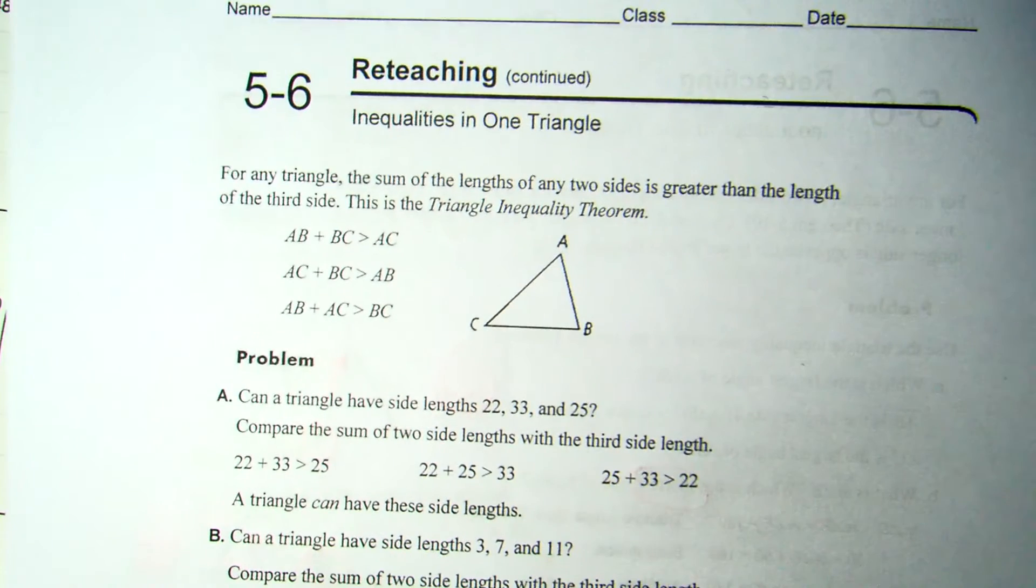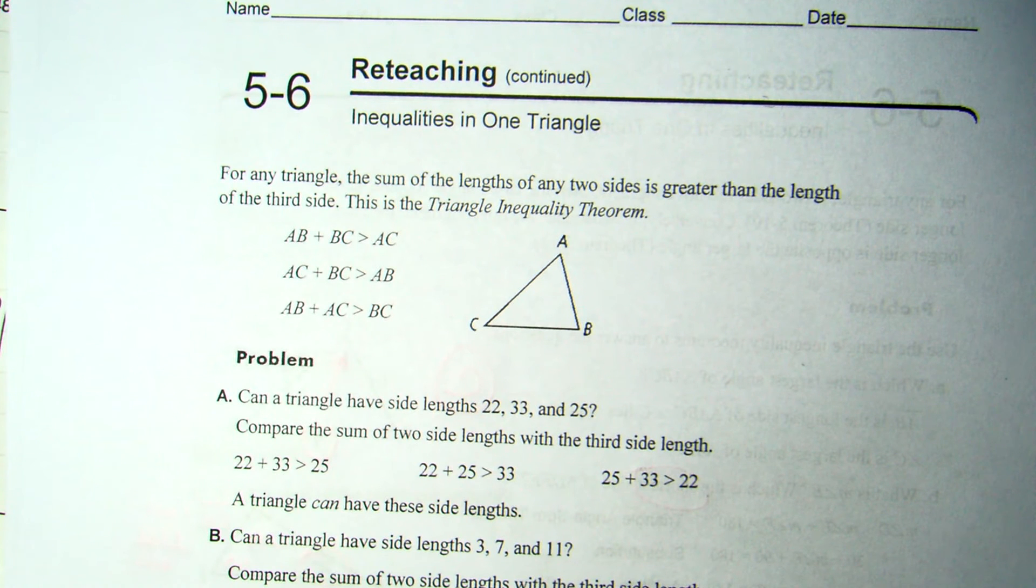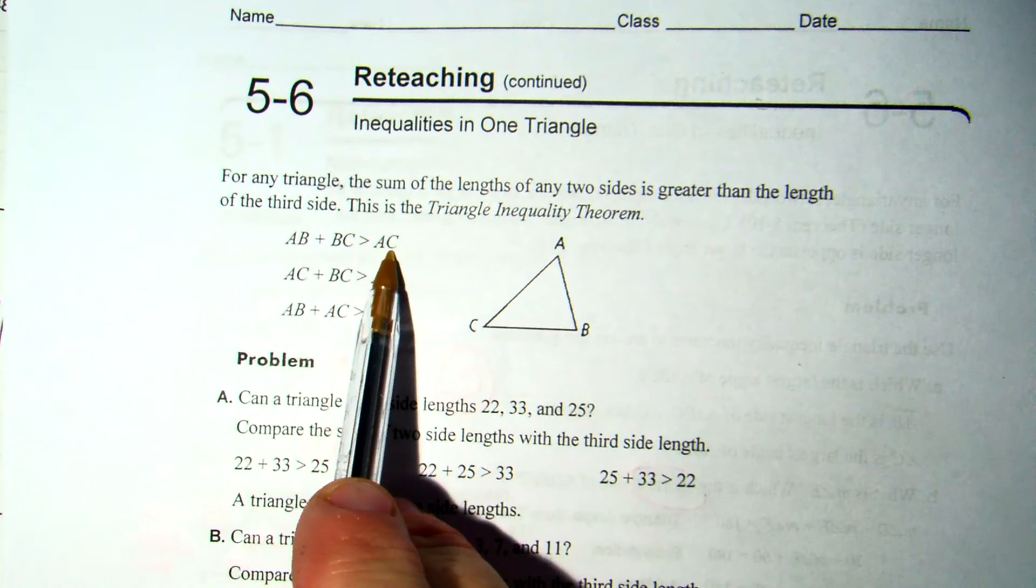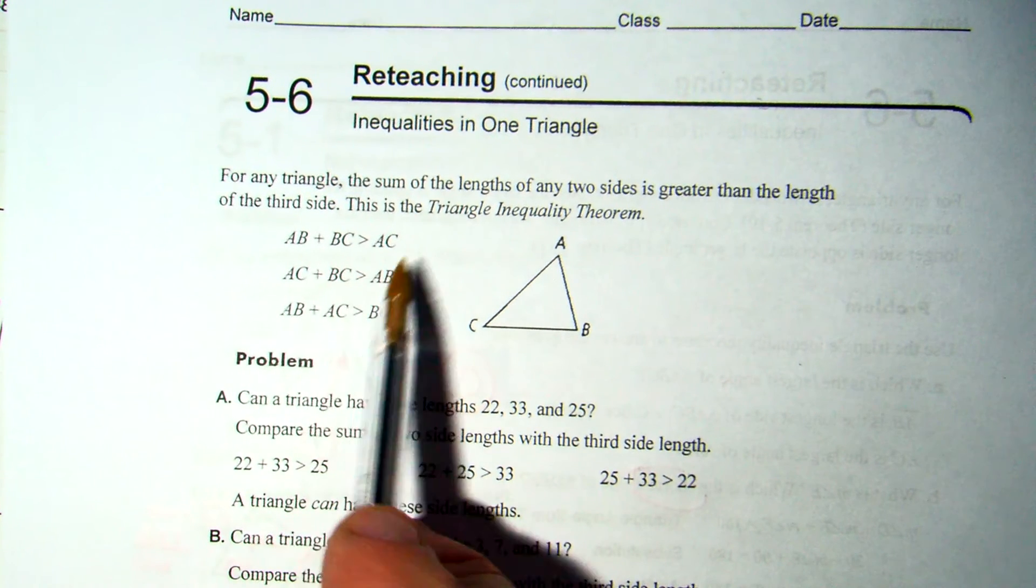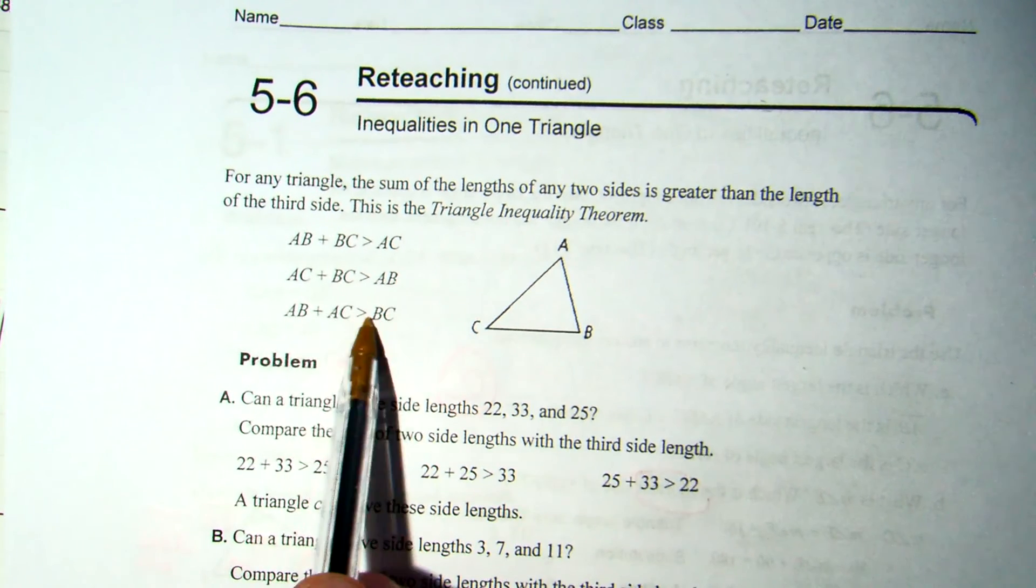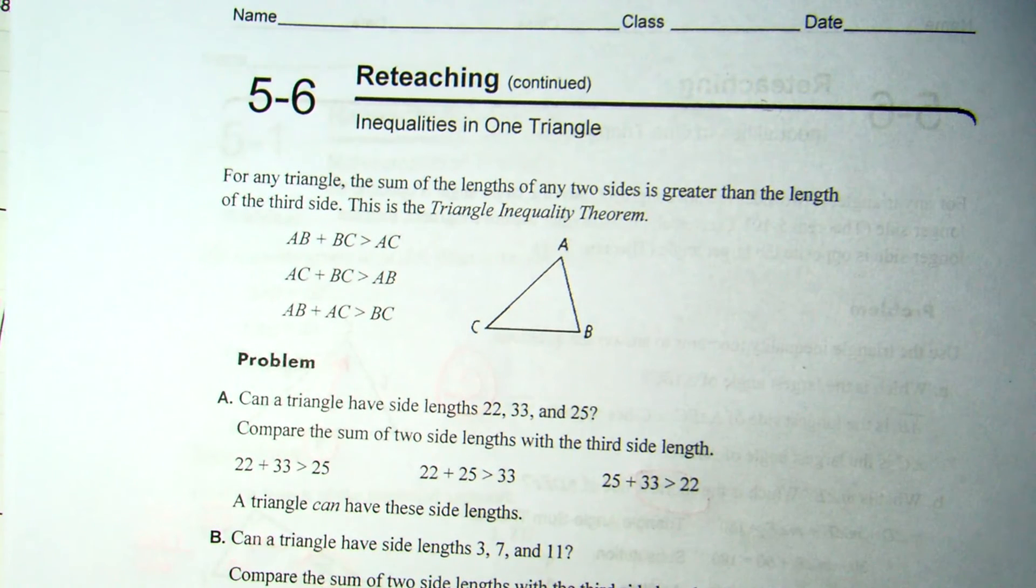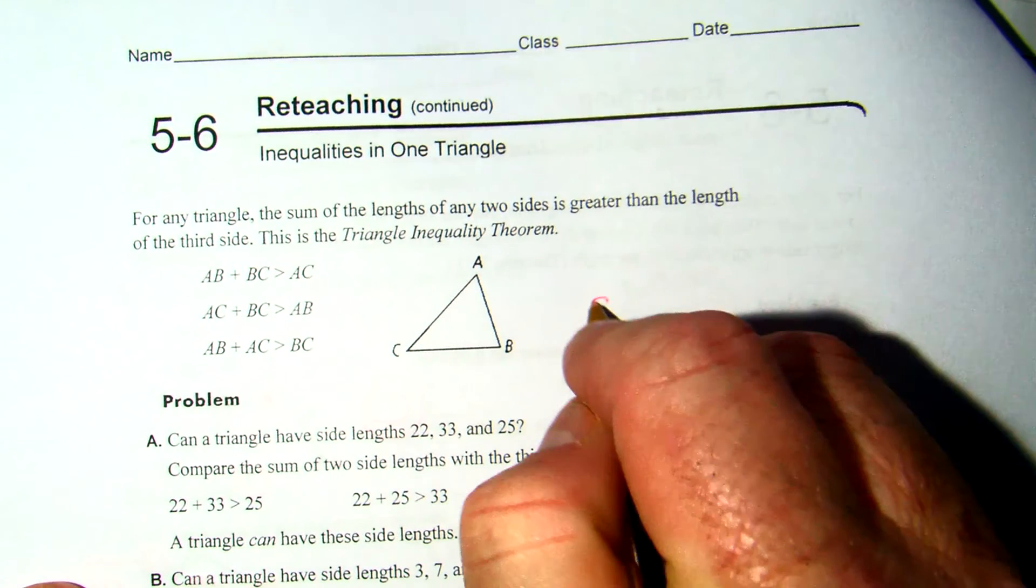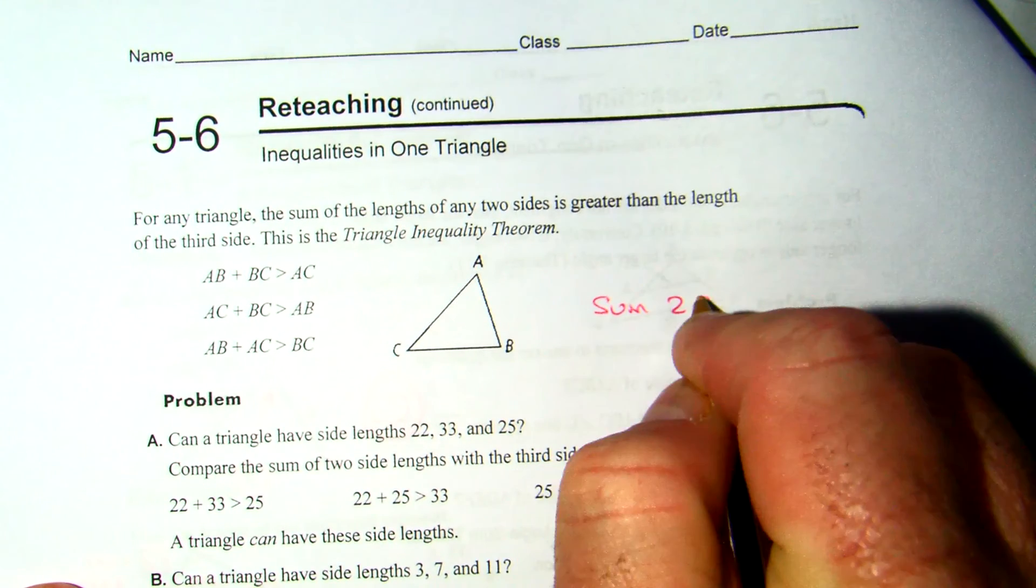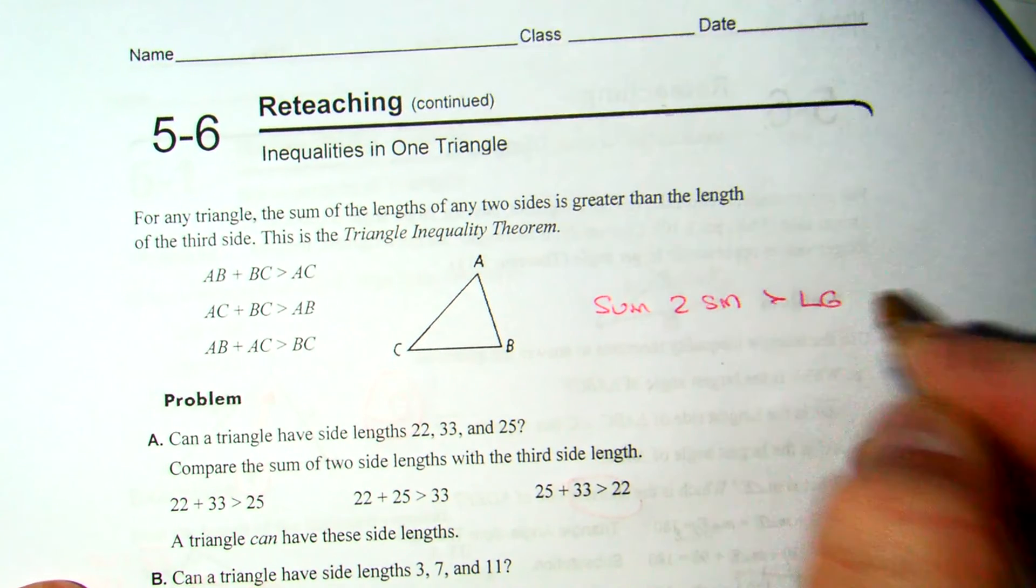Next up, we have the second part of that. For any triangle, the sum of the lengths of any two sides is greater than the length of the third side. This is known as the triangle inequality theorem. AB plus BC is greater than AC. AC plus BC is greater than AB. AB plus AC is greater than BC. You have to know that the sum of the two smaller sides is greater than the longest side.